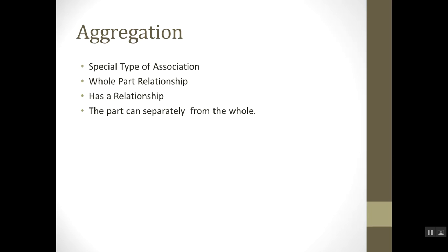In the phenomenon of aggregation, the part can exist independently from the whole. For example, consider one room — a room has four walls. A wall is a part of a room, but a wall can exist independently; it may not necessarily be part of a room.